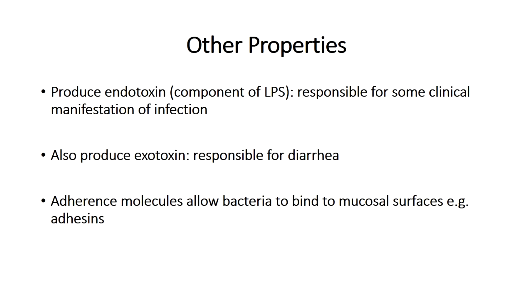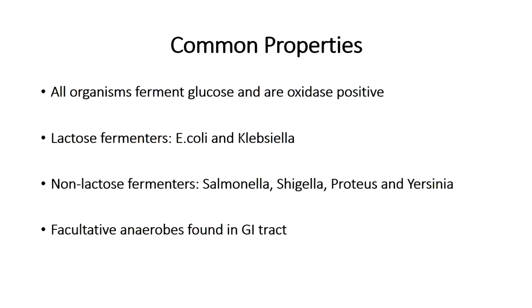Let's look at the bacteria further in terms of specific growth properties. When you consider the Enterobacteriaceae class as a whole, all of them ferment or process glucose and break it down. All are also oxidase negative. So those are two important common properties to remember about Enterobacteriaceae. You can also subcategorize them into two big groups.